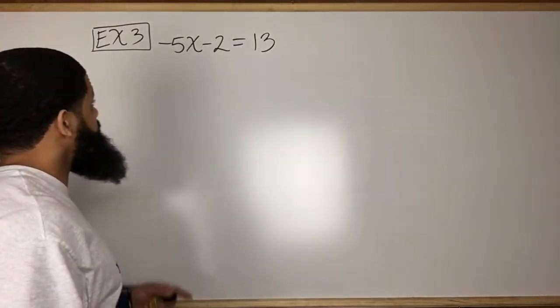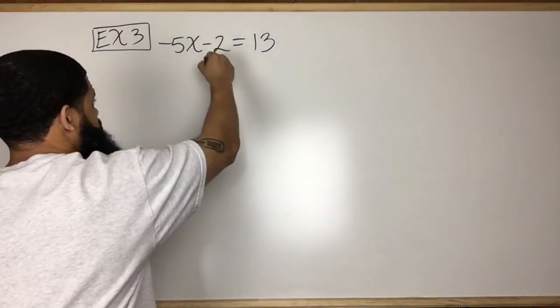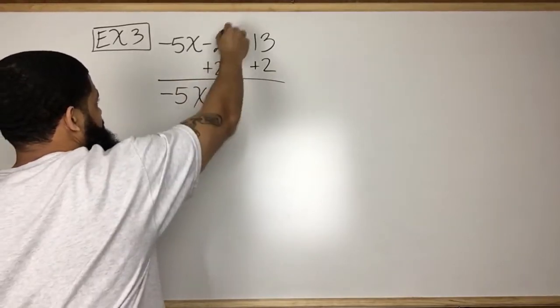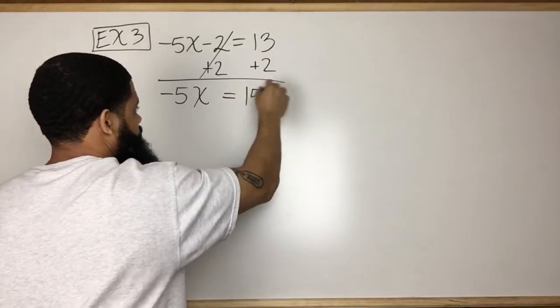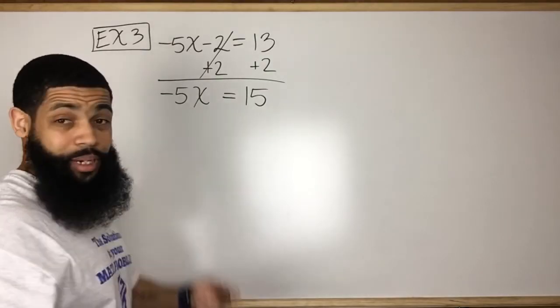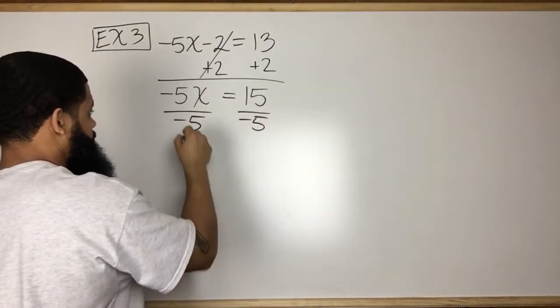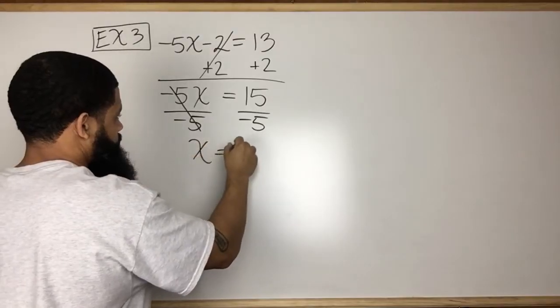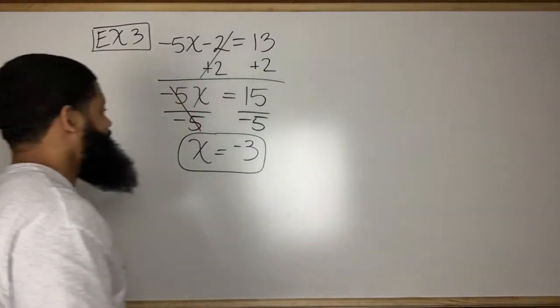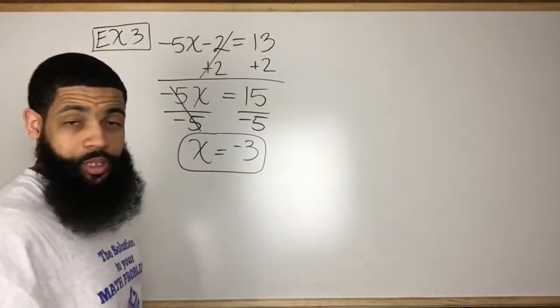Negative 5x minus 2 is equal to 13. Now, we still want to get rid of the subtraction. So the opposite of subtracting 2 is adding 2. So we're going to add 2 here, add 2 there. And then we have negative 5x equals 15. Remember, this is multiplication right here. So the opposite of multiplying by negative 5 is dividing by negative 5. Divide by negative 5 on both sides of the equal sign. x equals negative 3. And once again, we can always plug in our answer. Negative 5 times negative 3 is positive 15 minus 2 is 13.